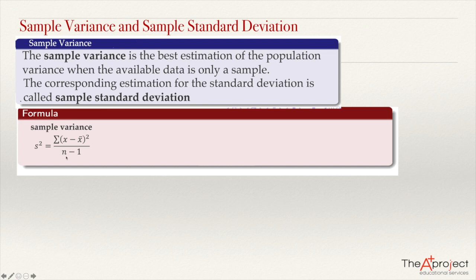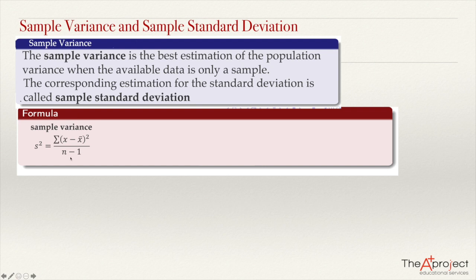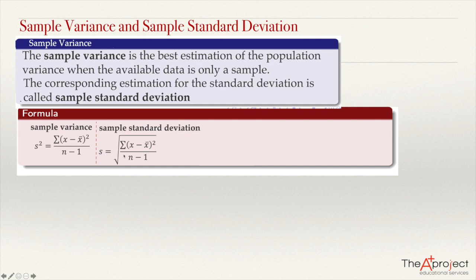Here is the key difference: in the population variance, we divide by n. Here we are going to divide by n minus one. And this n, in this case, will be just the sample size. In the population variance, n refers to the whole population. So the sample variance is like an average of all the deviations squared, but computed over n minus one. The sample standard deviation is just the square root of the sample variance.